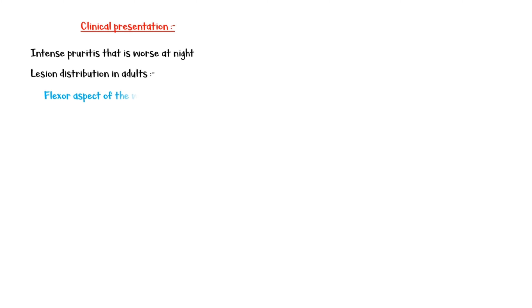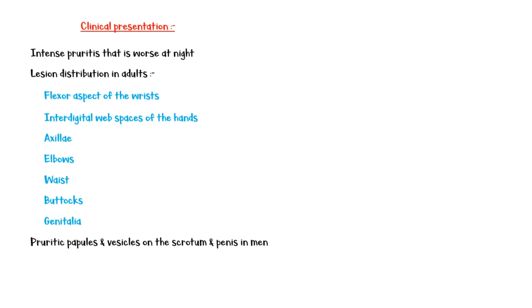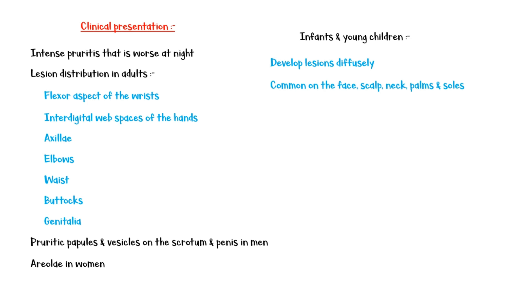Now let's discuss the clinical presentation of scabies. Patients complain of intense pruritus that is worse at night. Lesions are distributed predominantly in the following areas in adults: flexor aspects of the wrists, interdigital web spaces of the hands, axillae, elbows, waist, buttocks, and genitalia. Pruritic papules and vesicles on the scrotum and penis in men, and on the areolae in women, are highly characteristic. Infants and young children may develop lesions diffusely, but unlike in adults, lesions are common on the face, scalp, neck, palms, and soles. In immunocompromised individuals, all cutaneous sites are susceptible for lesions.